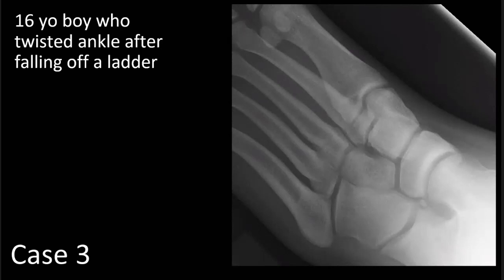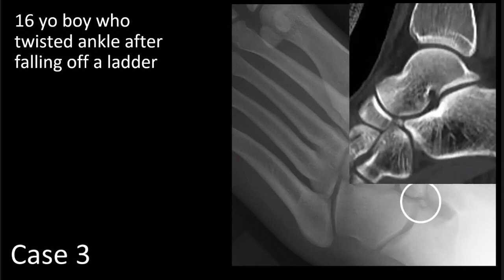Our next case is a 16-year-old boy who twisted his ankle after falling off a ladder. On this cone-down oblique view of the midfoot, we see a small bony density projecting over the space between the talus, calcaneus, cuboid, and navicular. On the reconstructed sagittal CT image, we again see the small bony density in that space between the four bones, most closely approximated to the anterior process of the calcaneus. The margin of the anterior process of the calcaneus is well-corticated, so we can deduce this bony density most likely represents an accessory ossicle.